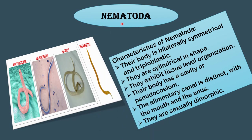The next phylum is Nematoda. Their body is bilaterally symmetrical and triploblastic with three layers. They are cylindrical in shape. Different types include Ascaris, Rhabditis and others. They exhibit tissue-level organization. Their body has a cavity called a pseudocoelom — not a true coelom but acting like one. The alimentary canal is distinct with a mouth and an anus. They are sexually dimorphic.